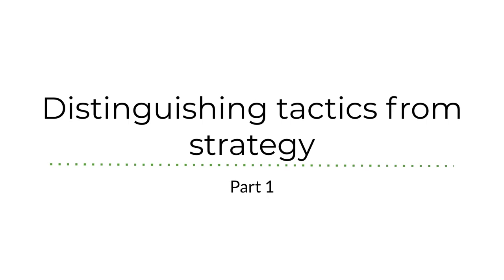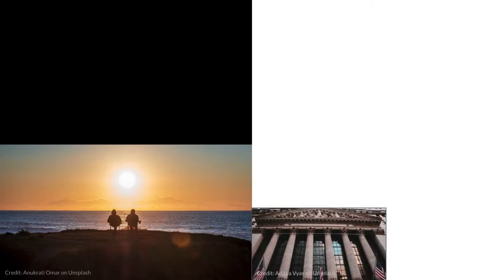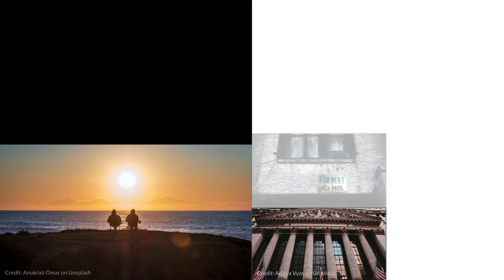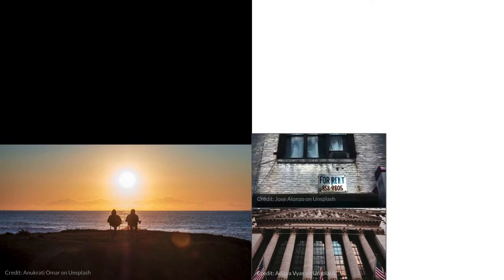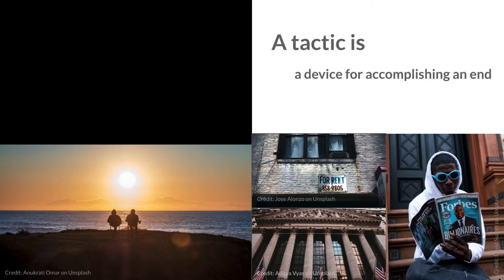Part one is about distinguishing between tactics and strategy. Imagine you want to retire on a beach. You could do some things to get money to make that happen — you could invest in the stock market, buy rental property, or even marry a billionaire. Those three things are tactics, which are defined by Merriam-Webster as devices for accomplishing an end.